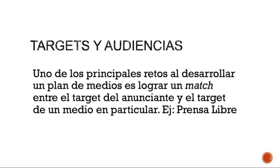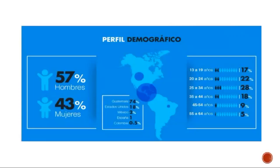Para entender mejor este punto, vamos a ver una gráfica del Media Kit de PrensaLibre.com. Todos los medios desarrollan un Media Kit, que es un documento en donde comunican cuál es su segmento de mercado, a qué segmento ellos llegan y qué tipo de información ofrecen. Este es el de PrensaLibre.com; si lo quieren ver completo, pueden hacer download. Lo ponen en su página hasta abajo, hay un pequeño link que dice 'anúnciate aquí' y ahí está el Media Kit.